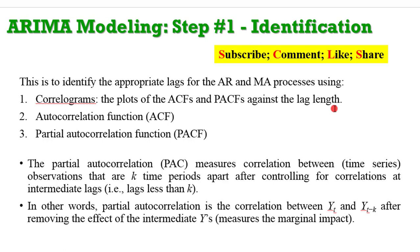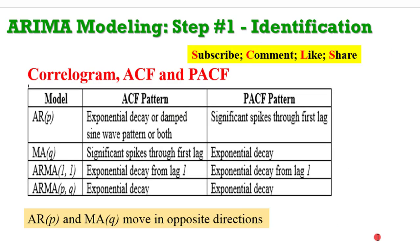The PACF simply measures the correlation between time series observations that are k time periods apart, after you have controlled for the correlations at intermediate lags. In other words, the PACF is the correlation between Y_t and Y_{t-k} after removing the effect of intermediate values — basically you are measuring the marginal impact. This table is very handy if you need to understand ARIMA modeling.